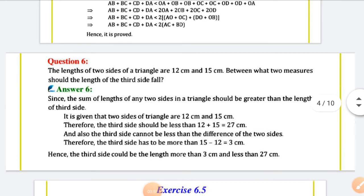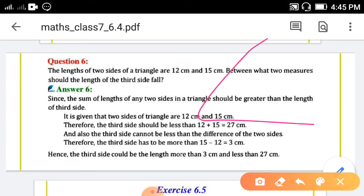Next, question number 6. The lengths of two sides of a triangle are 12 and 15 centimeters. Between what two measures should the length of the third side fall?